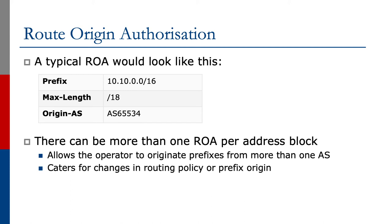Note that there can be more than one ROA per address block. This allows the network operator to originate prefixes from more than one AS. It caters for changes in routing policy or prefix origin and allows for multi-homing and other features.